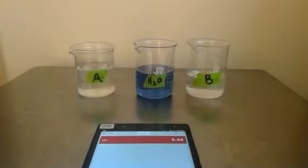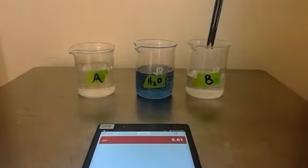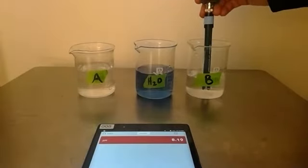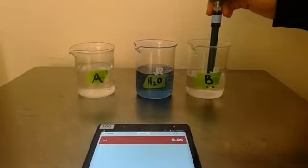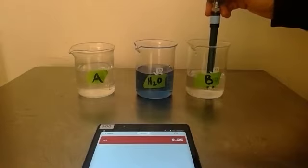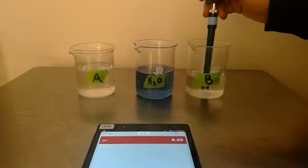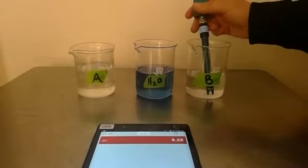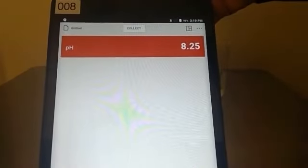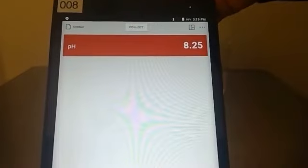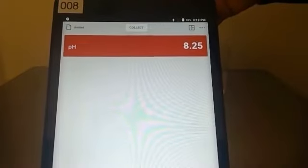Now let's take a look at a basic solution. I've rinsed my probe and dried it off carefully. The probe uses a little glass bulb to measure this. I'm going to stir it up and take the pH. The base that I have in here is sodium bicarbonate, which you probably know as baking soda. It's a weak base and it's trying to stabilize. We can see that it has a pH of 8.25.